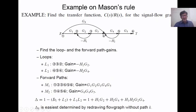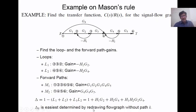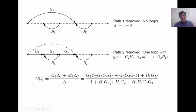Now we write delta using the formula: 1 minus the sum of all loop gains plus the sum of non-touching loop gain products taken two at a time. We have two loops so we write l1 plus l2. Both loops are non-touching — they share no node in common — so we can form one combination of both. There are no three loops, so we cannot write non-touching loops taken three at a time. Substituting the gains, we get the value of delta.